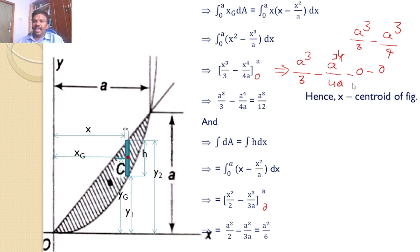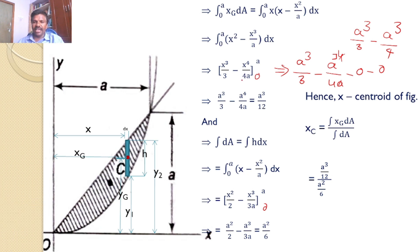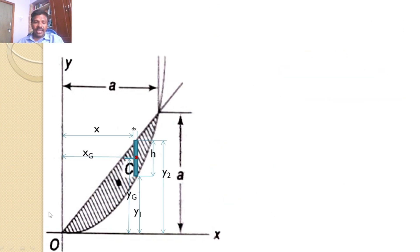Now I can calculate the x-centroid: xc = ∫xg·da / ∫da = (a³/12) / (a²/6). After simplification, xc = a/2. Similarly, I can calculate yg, the y-coordinate of the centroid of the given area. This distance yg is clearly indicated in the diagram.